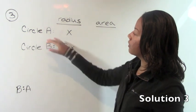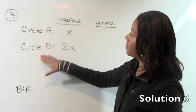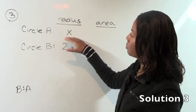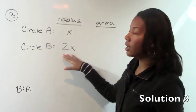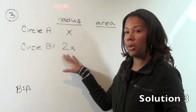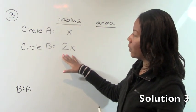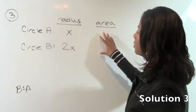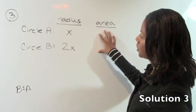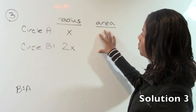Number 3. We're given two circles, circle A and circle B. We're told that circle A has a radius of x and circle B has a radius of 2x. We are asked to find the ratio of their areas. Notice that they switched the question and they want the ratio of B to A. So all we have to do is find the area of both of our circles and then put it into a ratio.